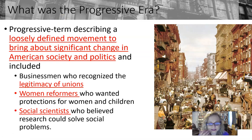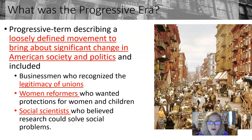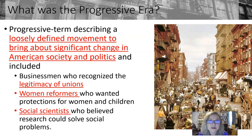The term Progressive is loosely defined as something that brings about significant change in American society, politics, and economics. The Progressive people included businessmen deciding whether to legitimize unions, women reformers — really educated middle-class women reformers leading the charge, just like in the early 1800s — and social scientists who saw how badly things were looking in this time period and were writing articles, making statements and speeches.